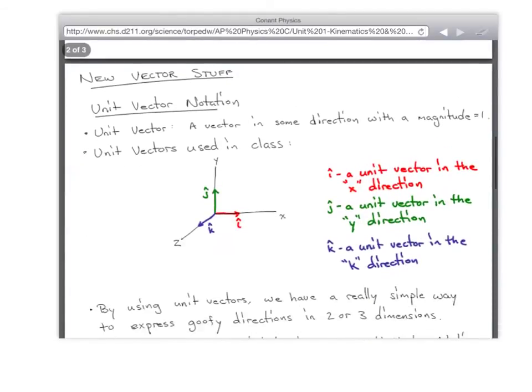All right. So new vector stuff. First of all, we've got unit vector notation. A lot of the stuff we're going to be doing is in three dimensions, unlike in AP Physics B. In three dimensions, easy way to describe that is x, y, and z directions. All right. So if you're struggling to figure out which one's the x, which one's the y, and which one's the z, just remember the right-hand rule.